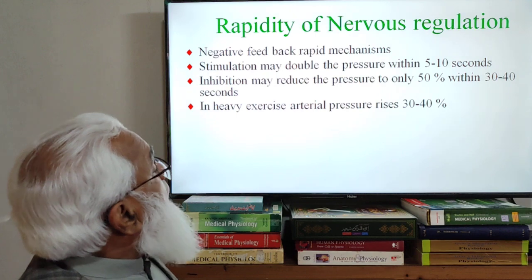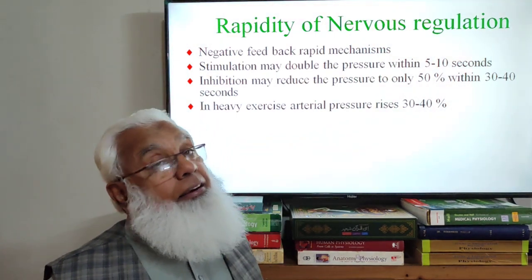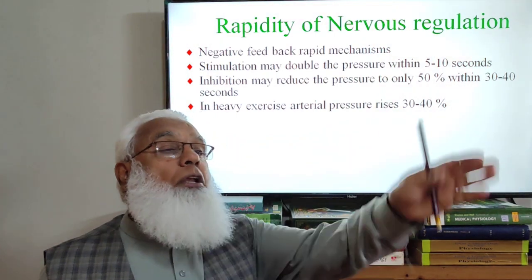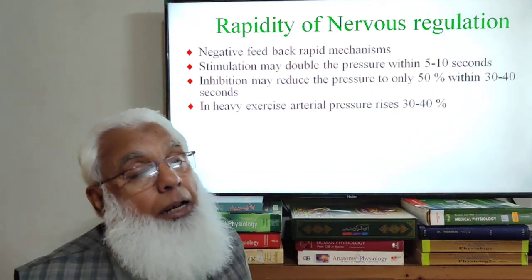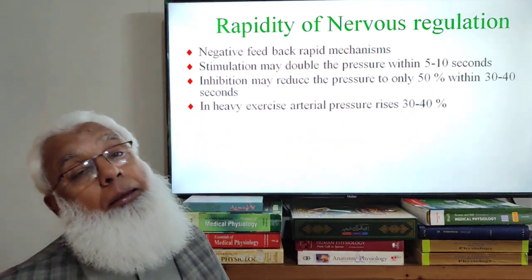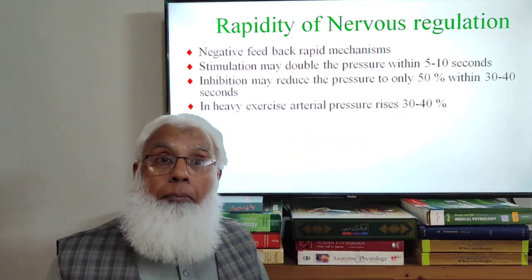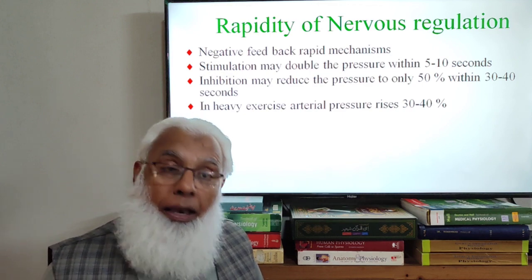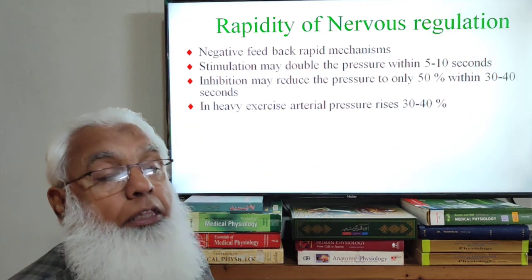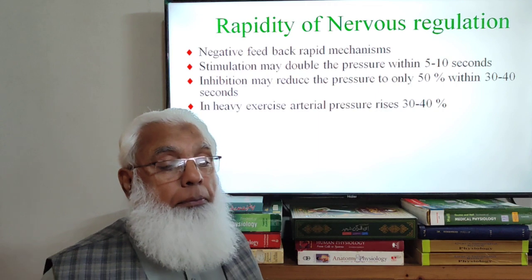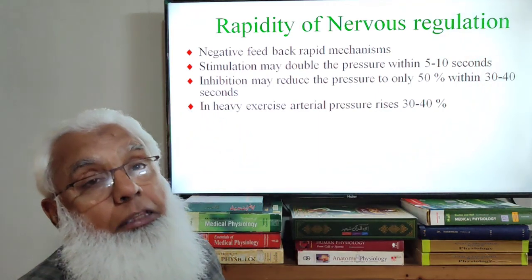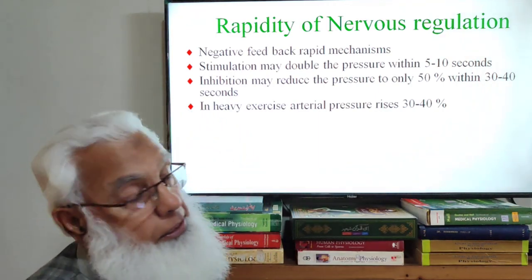In heavy exercise, there is sympathetic stimulation and blood pressure increases. A 30 to 40% increase in blood pressure may occur in heavy exercise. This is required to force the blood — providing the pressure head for increased blood flow in the muscles during exercise.